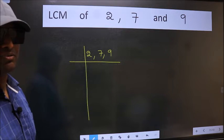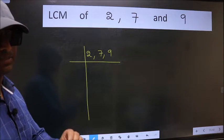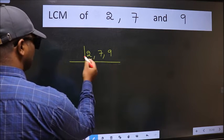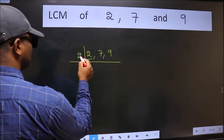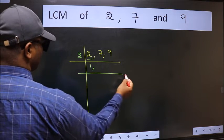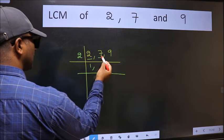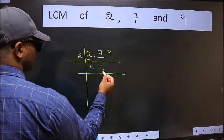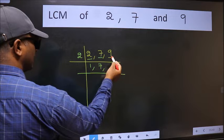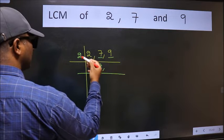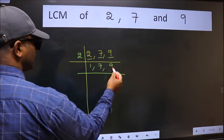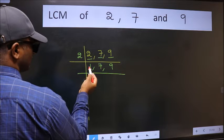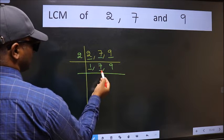Now we should focus on the first number, which is 2. 2 is a prime number, so 2 divides by 2 once. The number 7 is not divisible by 2, so we write it down as it is. The number 9 is not divisible by 2, so we write it down as it is. Now we got 1 here, so focus on the next number, 7.